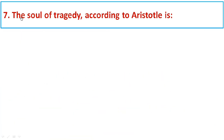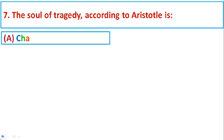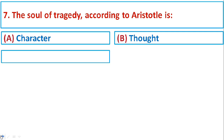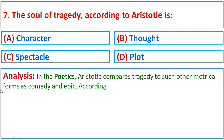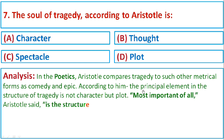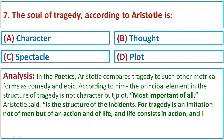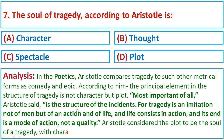Question number seven: The soul of tragedy, according to Aristotle, is Option A: Character, Option B: Thought, Option C: Spectacle, or Option D: Plot. In the Poetics, Aristotle compares tragedy to comedy and epic. According to him, the principal element in the structure of tragedy is not character but plot. Aristotle said the structure of the incidents is most important, as tragedy is an imitation not of men but of an action and of life. Aristotle considered plot to be the soul of tragedy. The correct option is D: Plot.